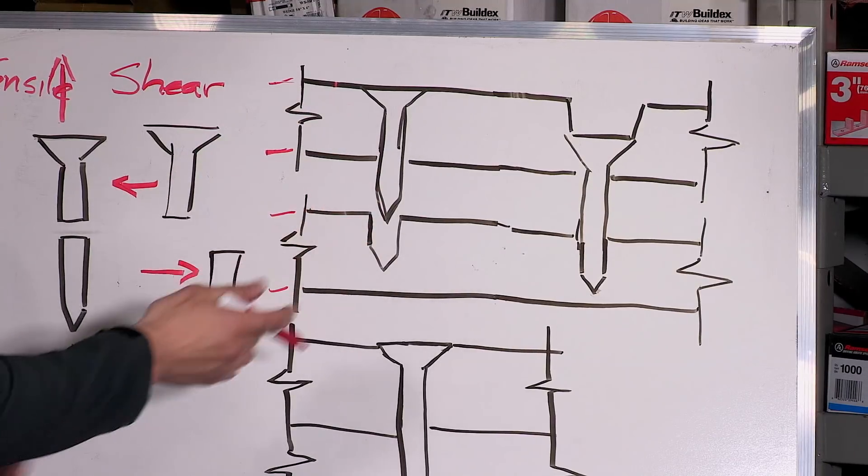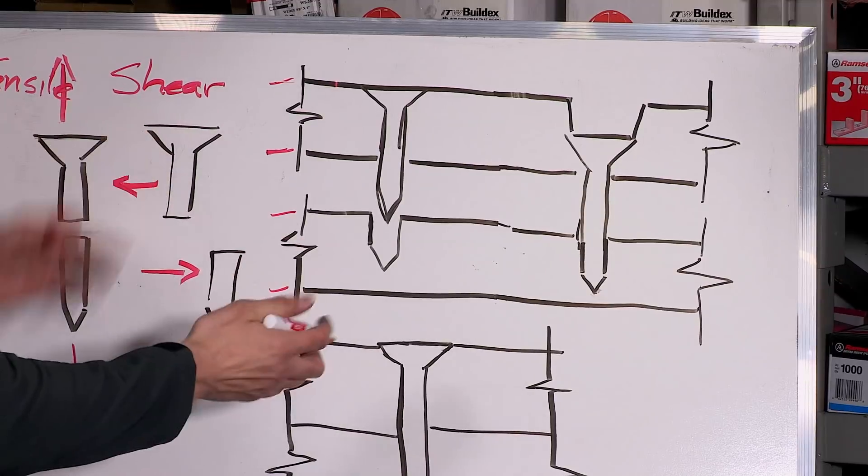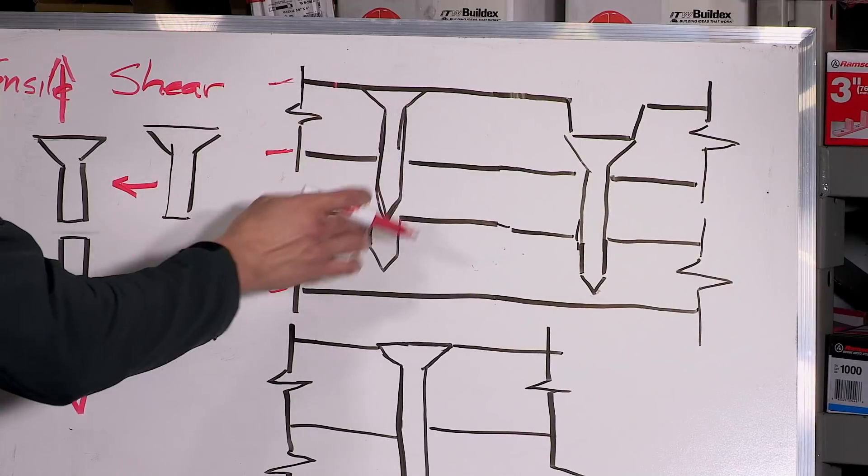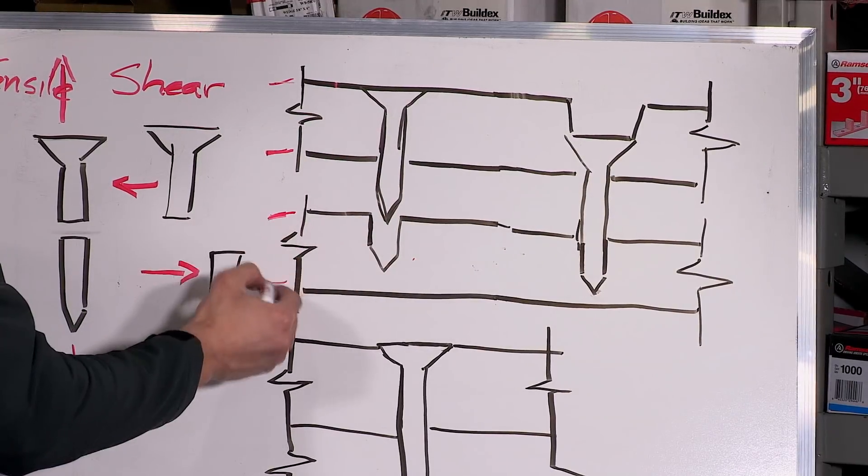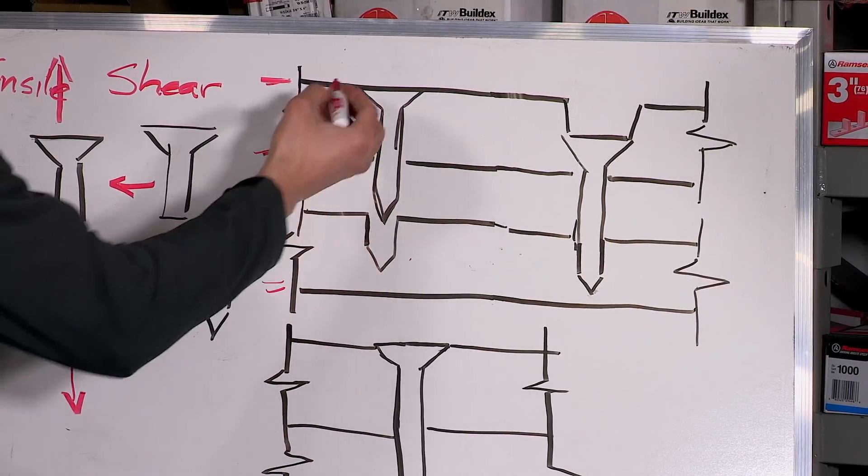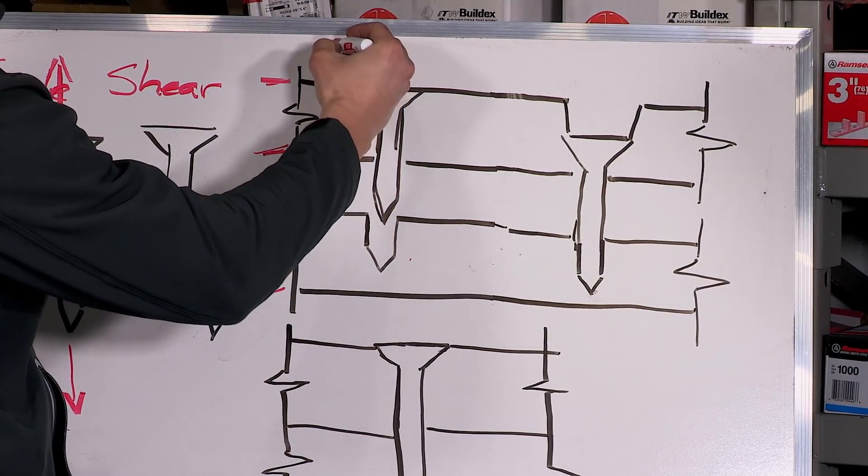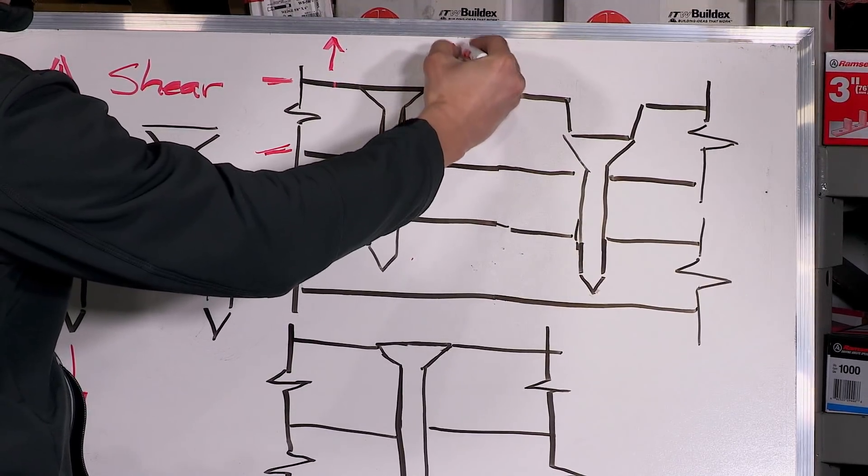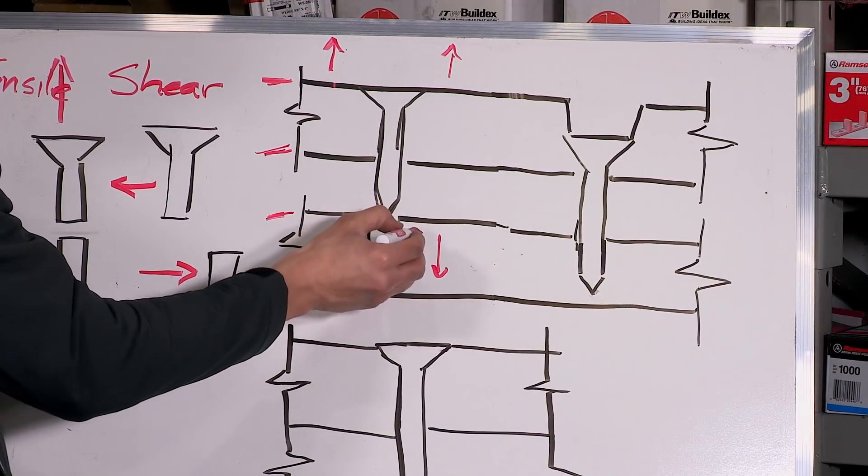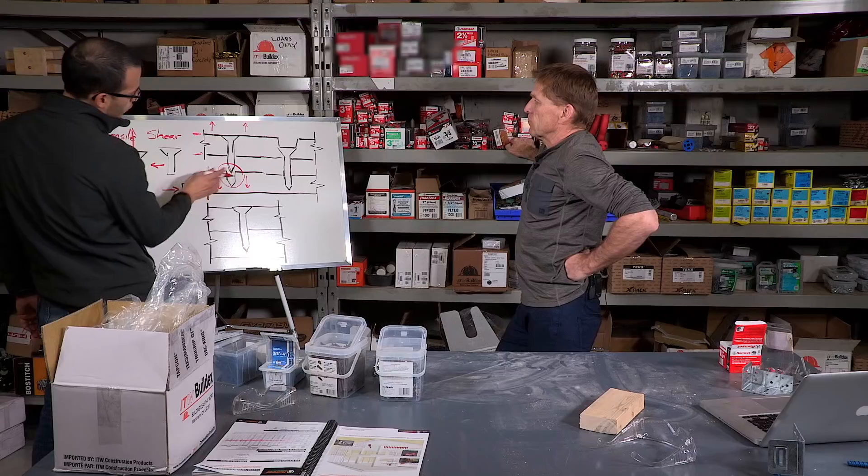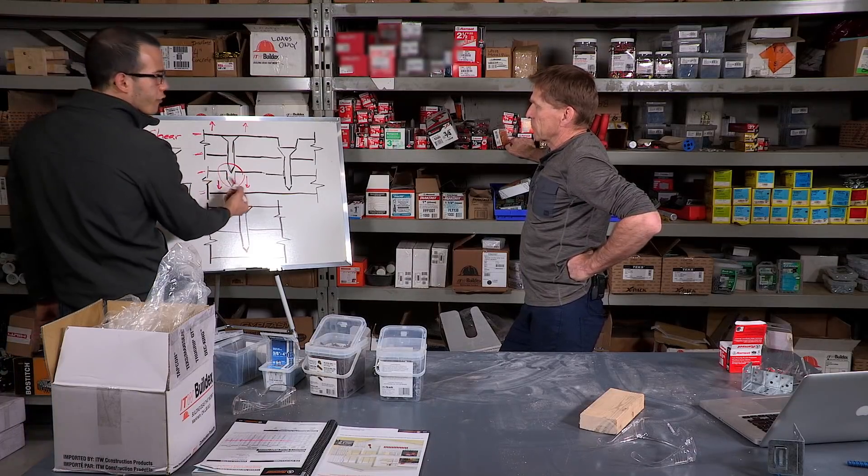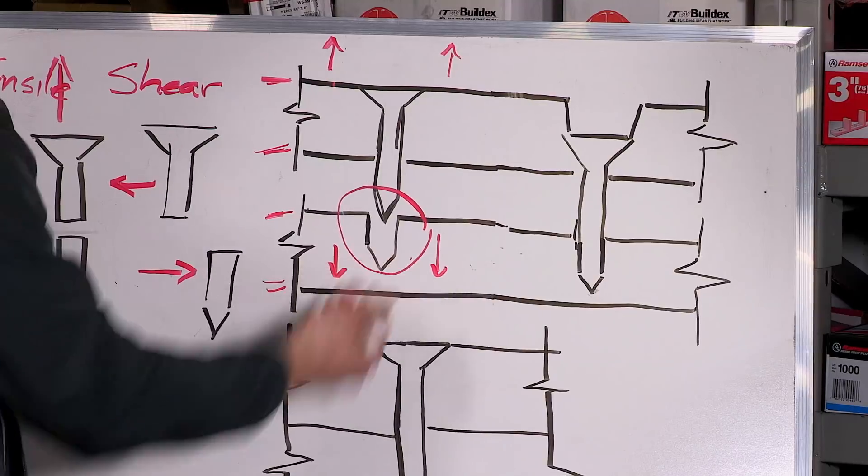When we're looking at how it interacts with a substrate, we'll take the example of a wood screw with the main member down here and then the side member up here. There are three different failure modes that are typically evaluated. You can have the side member going in one direction and the main member going in a different direction. This could generate withdrawal failure or pull-out - basically the screw pulls out of the bottom member. That's typically where the threads are going to be engaged in that main member down there.